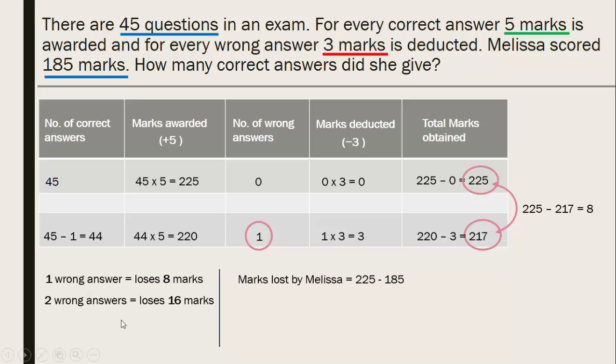So marks, total marks lost by Melissa. She could have, if she had done everything correctly, she could have got 225 the full marks, but she only scored 185, which means she lost 40 marks. And we also know that for every mistake, she loses 8 marks. So number of mistakes is 40 divided by 8. That is, total number of marks lost divided by the number of marks that she's going to lose for every mistake. So this will give you the total number of mistakes.